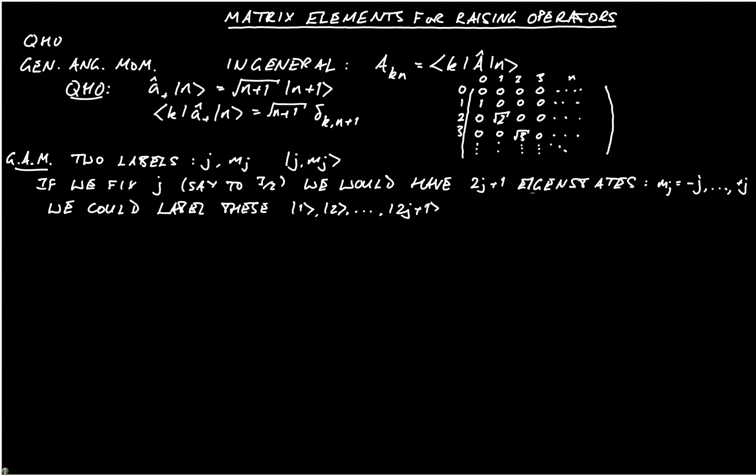But normally, it's clearer if we use the values of j and mj, so we have 3 over 2 comma 3 over 2, 3 over 2 comma 1 half, etc. That's just to cover the notation to make it clear what we're doing.